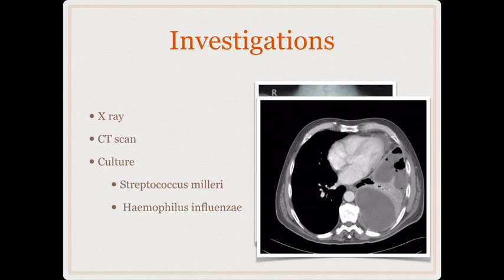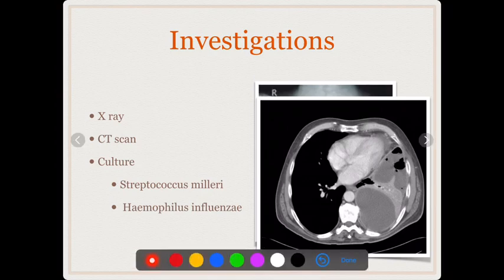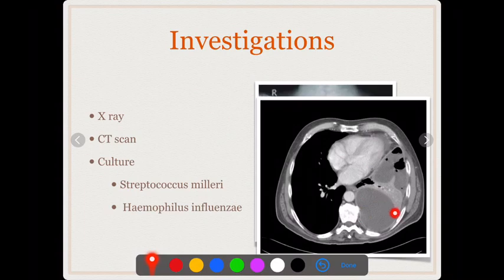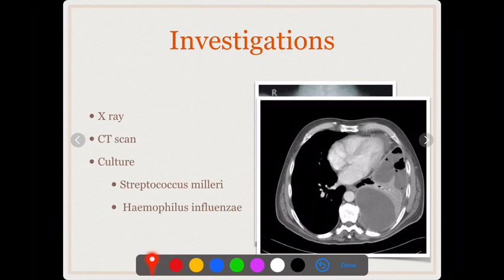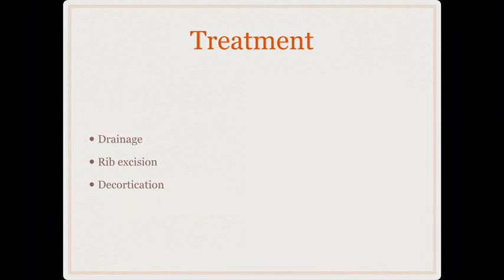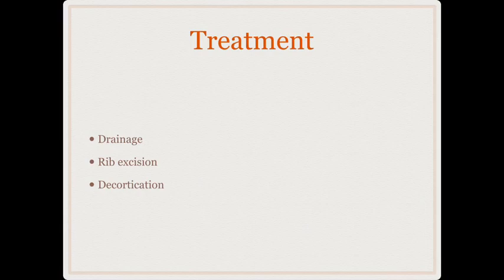CT scan gives a clear picture of the number of loculations — you can see thickened pleura, septations inside the empyema cavity, and accumulations of pus along with pockets of air. This is a typical CT finding in empyema. Culture can be done by aspirating the fluid; the most common organisms isolated from empyema are Staphylococcus or Streptococcus.